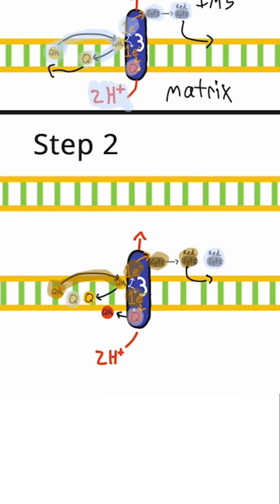The other electron from that ubiquinol is going to move to that halfway reduced coenzyme Q that was halfway reduced in step 1. The addition of the second electron is going to fully reduce it and create a ubiquinol, so that ubiquinone from step 1 has now turned into a ubiquinol.